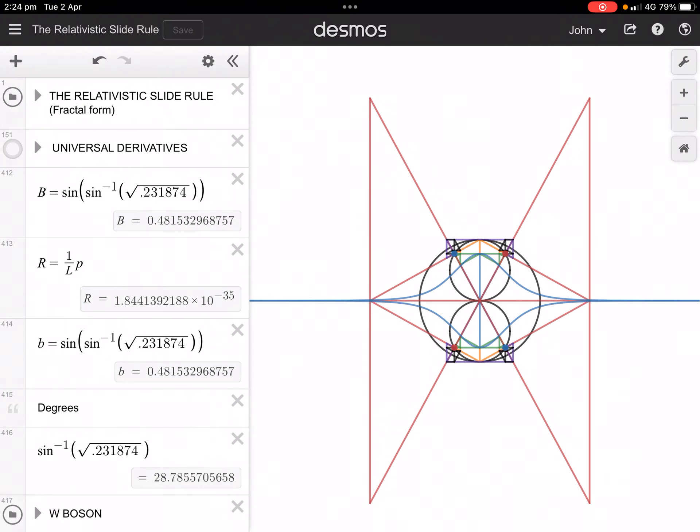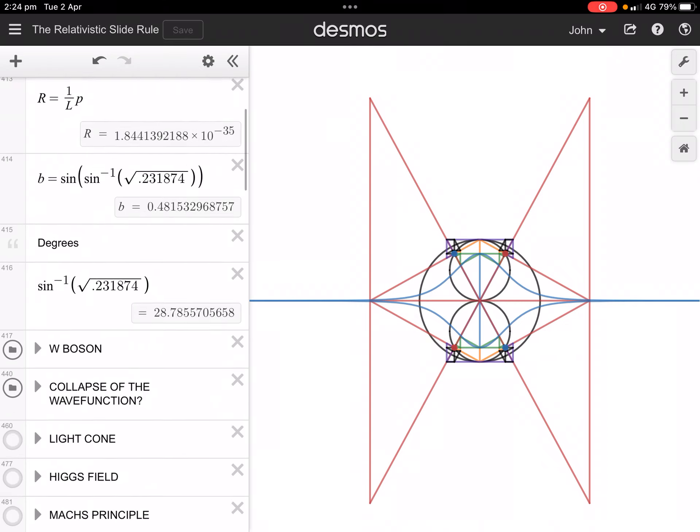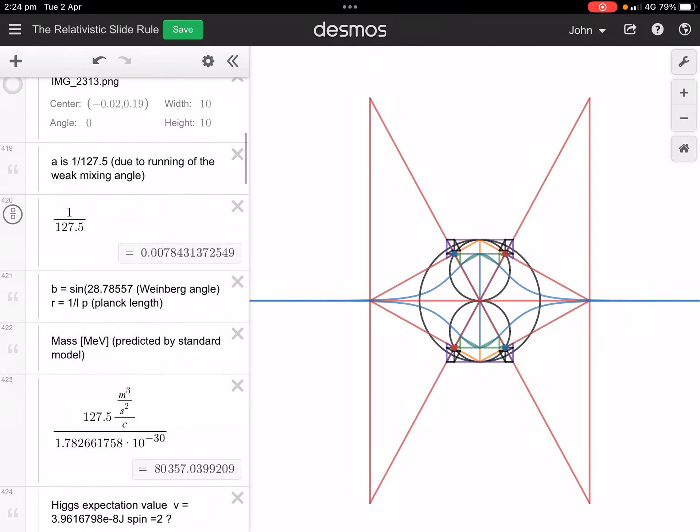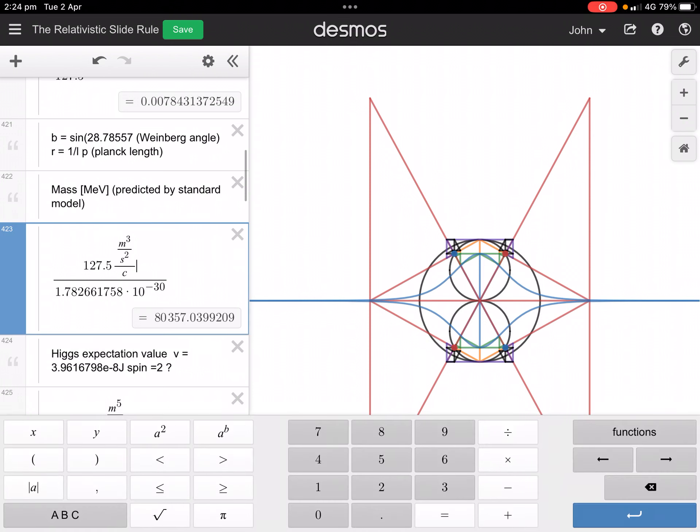Okay, this might be the most compelling evidence that the slide rule agrees with the standard model and it predicts the mass of the W boson, and that is exactly the mass predicted by the standard model.